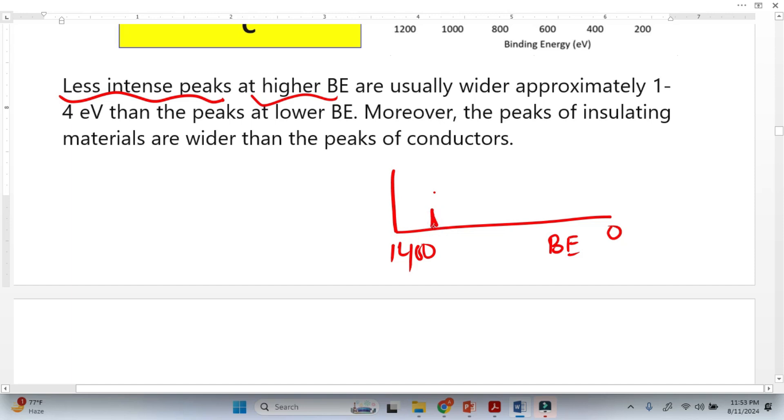If you look here, the low intensity peak at higher binding energy will be wider compared to the high intense peak at low binding energy. So this is also another identification.